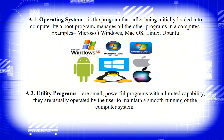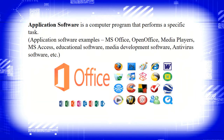We also have utility programs — these are small, powerful programs with a limited capability, usually operated by the user to maintain a smooth running of the computer system. Application software refers to computer programs that perform a specific task. Examples include MS Office, Open Office, Media Players, MS Access, Educational Software, Media Development Software, and Antivirus Software.